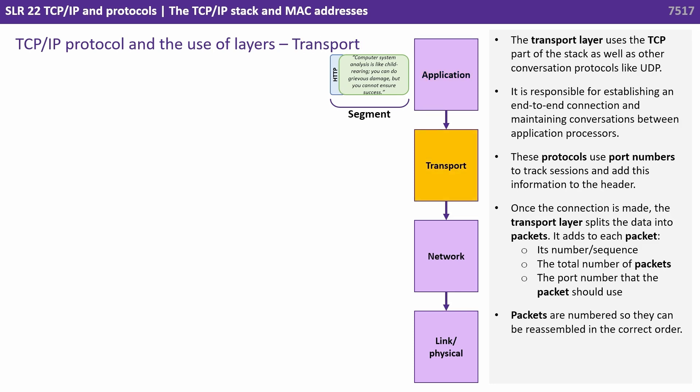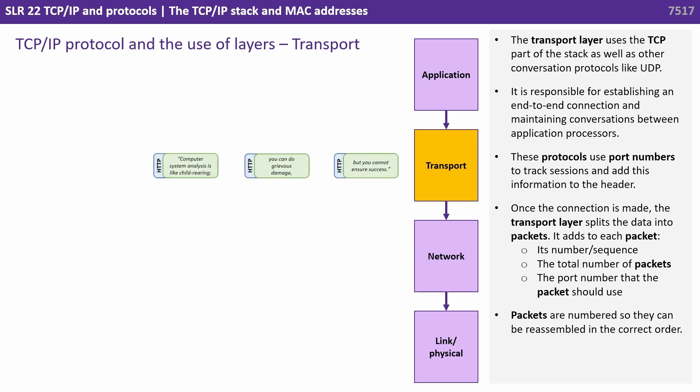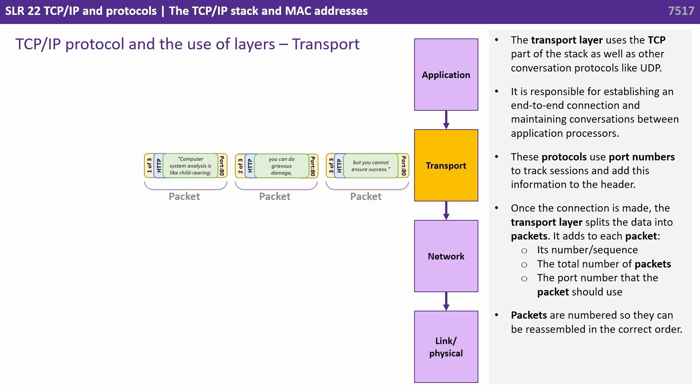We now go to the transport layer. This uses the TCP part of the stack as well as other conversation protocols like UDP. It's responsible for establishing an end-to-end connection and maintaining conversations between application processes. These protocols use port numbers to track sessions and add this information to the header.